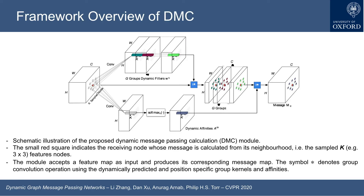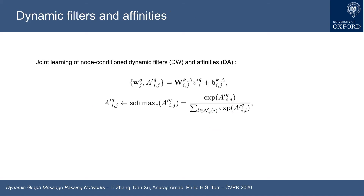This is a schematic illustration of the proposed dynamic message parsing calculation module. The small right square indicates the receiving nodes whose message is calculated from its neighborhood. The module accepts a feature map as input and produces its corresponding messaging map. The group convolutional operation dynamically predicts position-specific group kernels and affinities. The filter weights and affinities can be jointly learned in our framework.